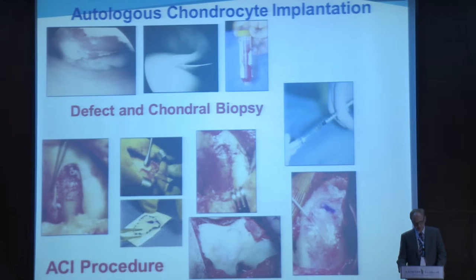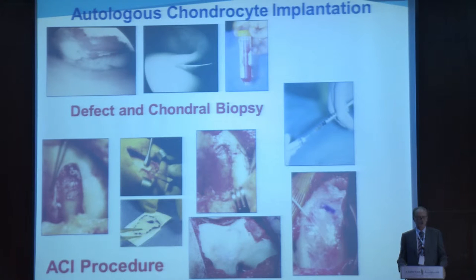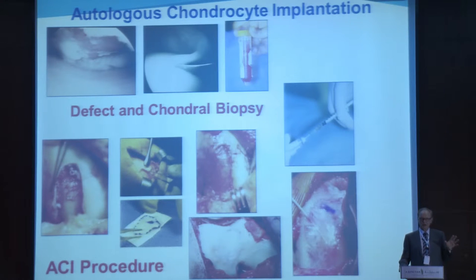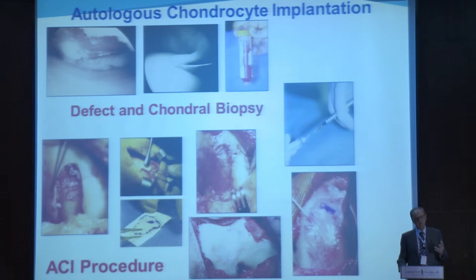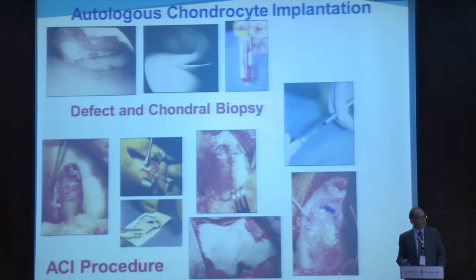ACI is a two-stage procedure. When a lesion is identified, a biopsy is obtained, the biopsy is cultured and grown, and then one comes back and puts the cells under — in the 90s we did it under periosteum, but now we put it under an absorbable type 1/type 3 collagen membrane that is sewn in place, the cells are injected, and then the tissue goes on to repair by a fairly slow process.